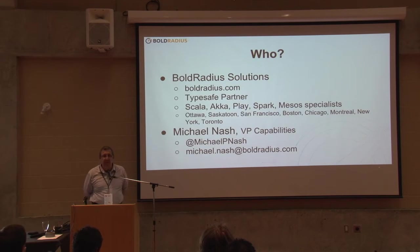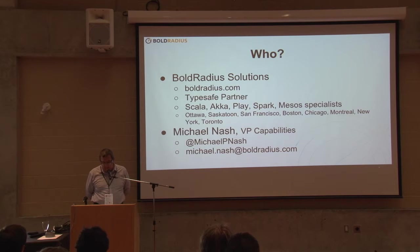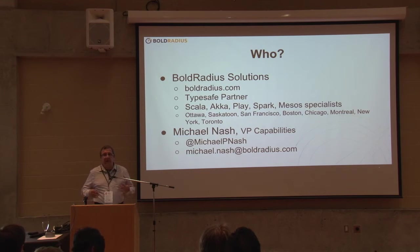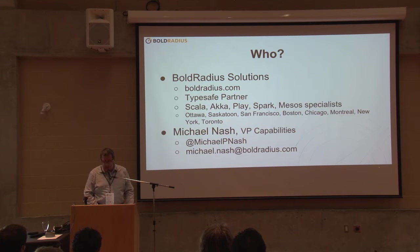Who am I, and why should I be talking about this? I work for Bold Radius Solutions. I'm Michael Nash, VP of Capabilities. We're a TypeSafe partner. We do a lot of enablement for many different companies and organizations all over the US, a little bit into Europe. There's my Twitter handle and email — that's who I am.